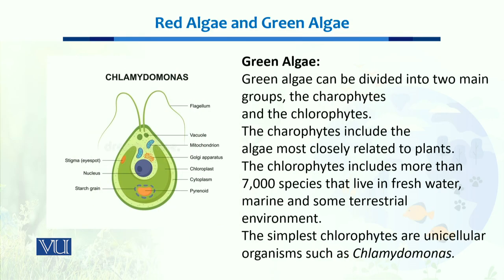All molecular systematics and cellular morphology supports the theory that green algae and plants are closely related. For unicellular examples of green algae, Chlamydomonas is the best example. Green algae is divided into two main groups: the charophytes and the chlorophytes. Chlorophytes include more than 7,000 species, which live in freshwater, marine water, and some in the terrestrial environment. The simplest chlorophyte is the unicellular Chlamydomonas.